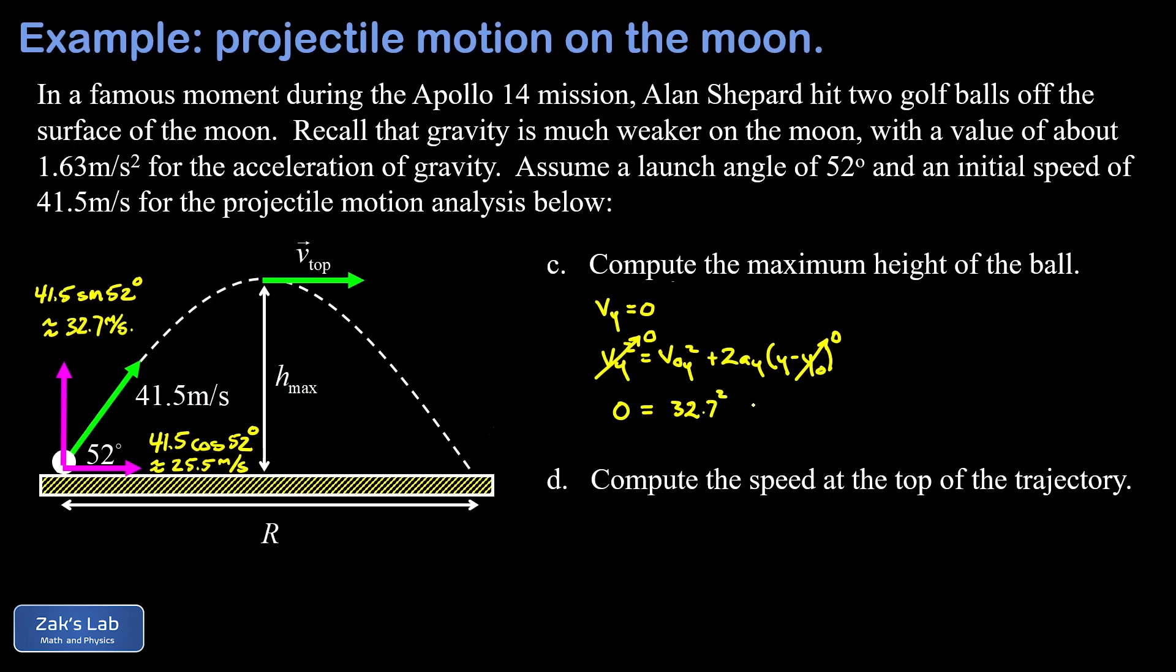The acceleration term is going to be negative because our acceleration points downward. I end up with a minus two times 1.63, moving the minus sign out in front of that term, multiplied by my final y coordinate, which we could call y_max. When we solve for y_max in our calculator, we end up with 328 meters for the maximum height.